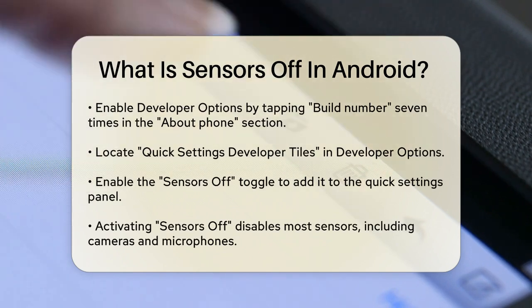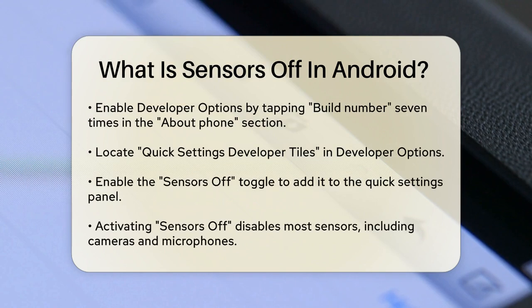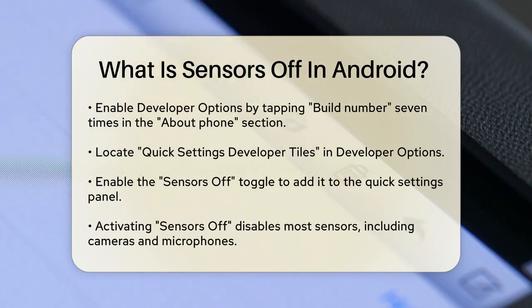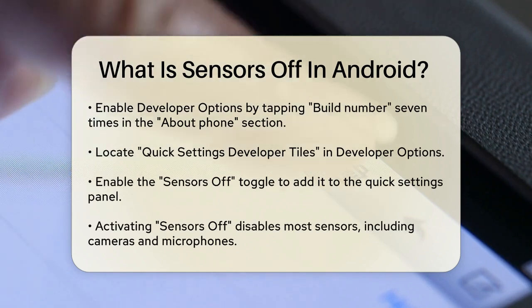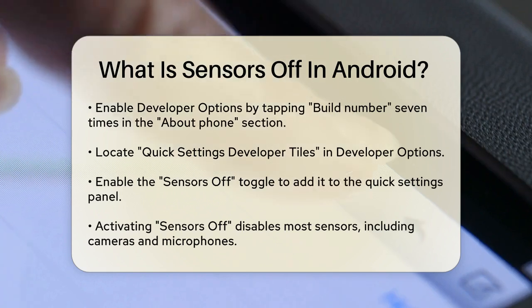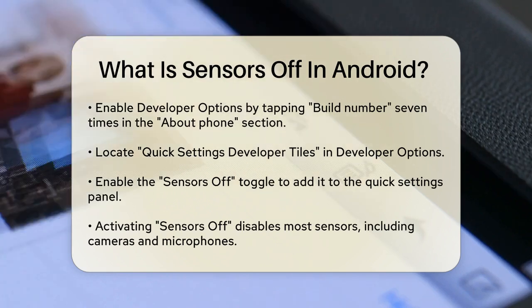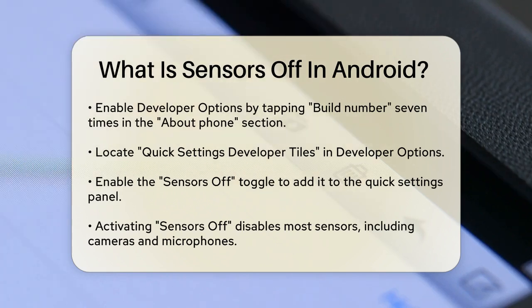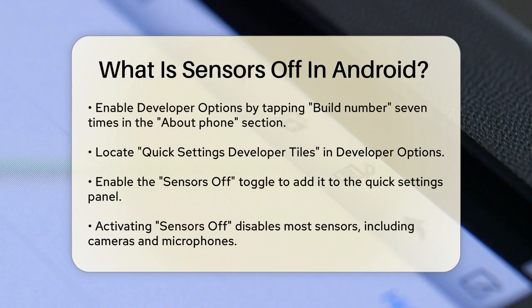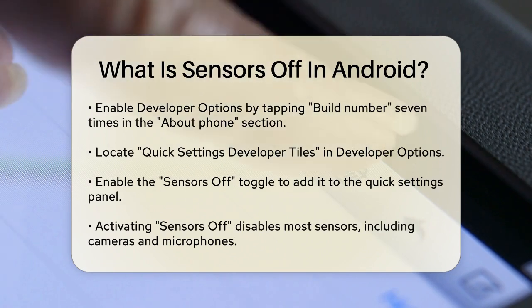In the Developer Options, scroll down and find the Quick Settings Developer Tiles option. Tap on this, and then look for the Sensors Off toggle. Enable this toggle, and you'll see a new Sensors Off tile in your Quick Settings panel.